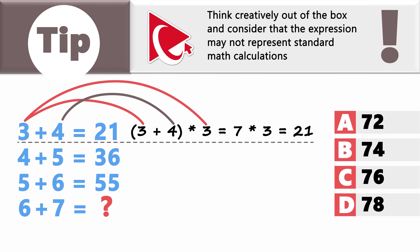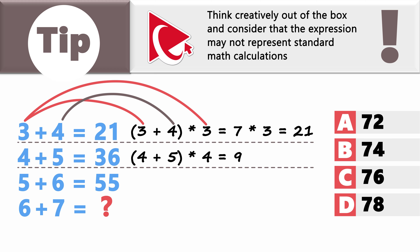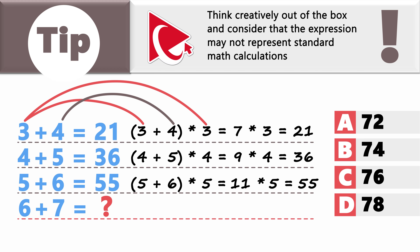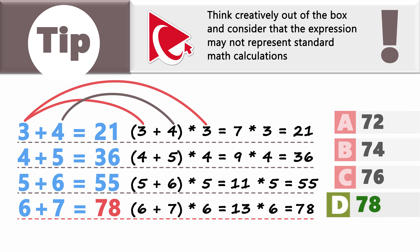For row 2: 4 plus 5 equals 9, multiplied by 4 equals 36. For row 3: 5 plus 6 equals 11, multiplied by 5 equals 55. So the missing value is 6 plus 7 equals 13, multiplied by 6, which equals 78. The correct answer is choice D, 78.